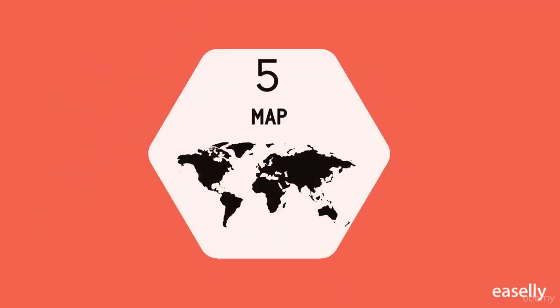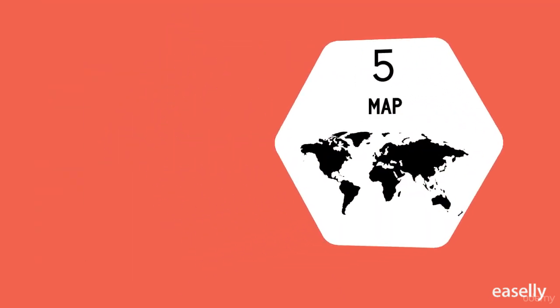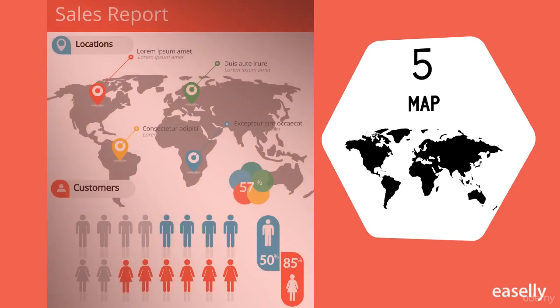Number five: the map infographic showcases data trends based on location. It is best used to compare places, culture, and people through setting-centric data and demographics.